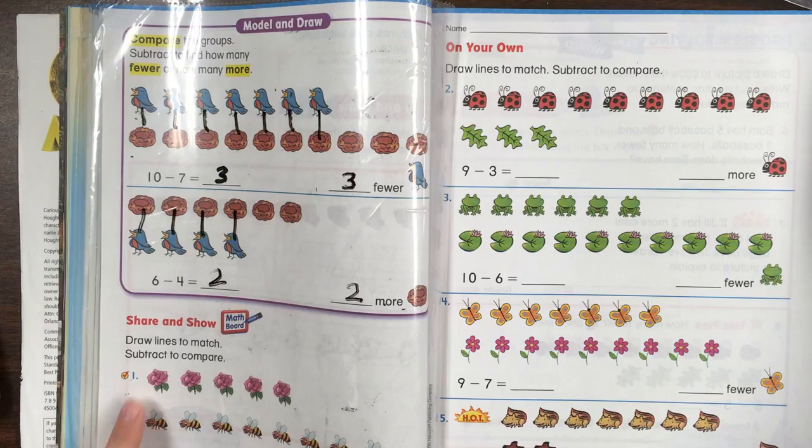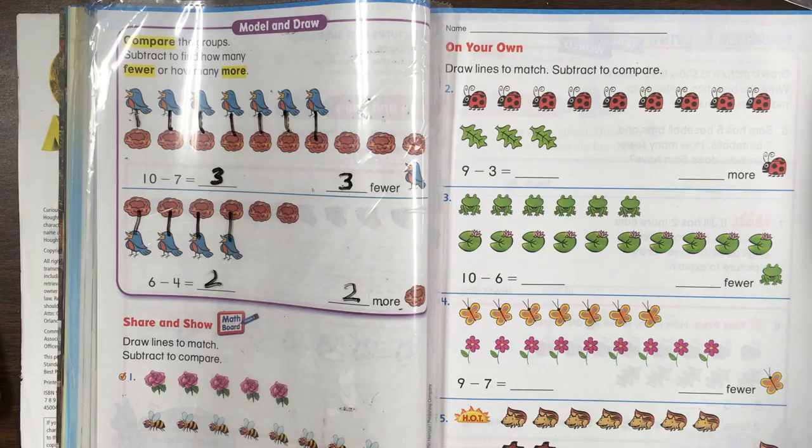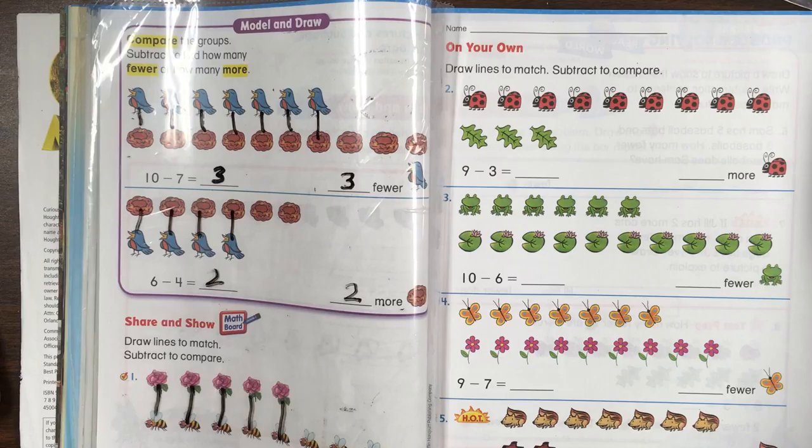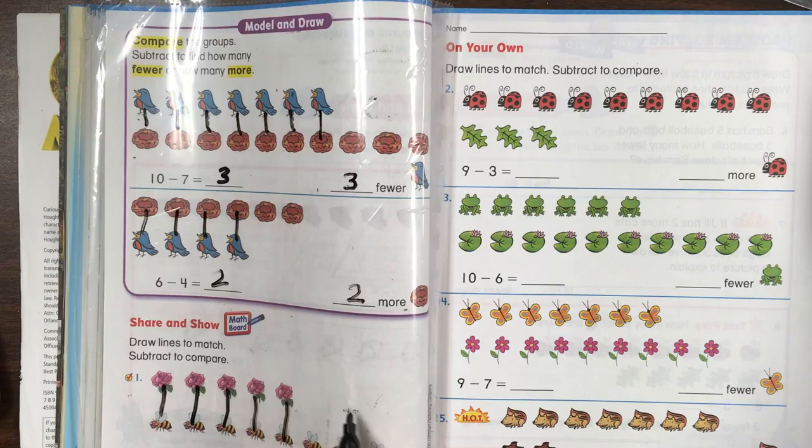Let's try this one. Draw lines to match. Subtract to compare. We want to know how many fewer flowers there are. So connect each flower to a bee. And now we have three poor bees that don't get a flower because there are how many fewer flowers than bees?